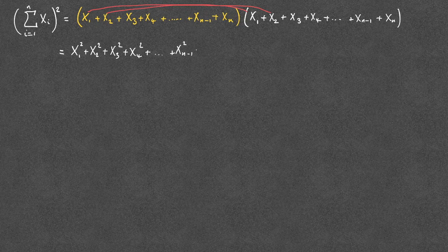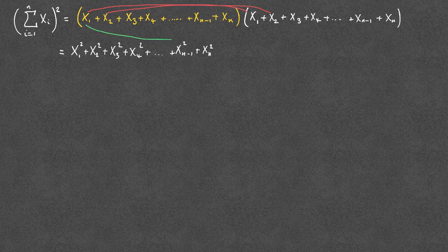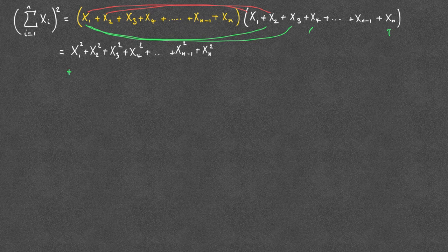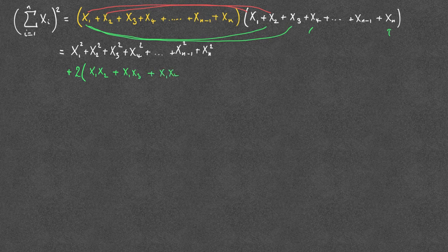But then we'll also have all of the cross product terms. Starting with x1, it will have cross product terms with x2, x3, x4, x5, x6, all the way up to xn. And because you've got the reverse going on — x2 interacting with x1, x3 interacting with x1 — we'd have two lots of those cross product terms. So we can write down plus 2 lots of: x1·x2 + x1·x3 + x1·x4, all the way up to x1·xn.